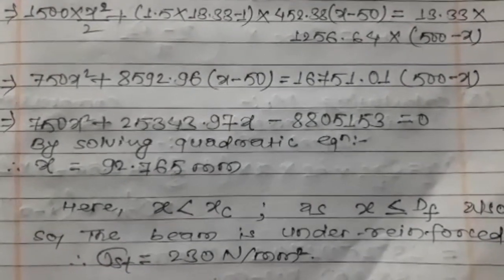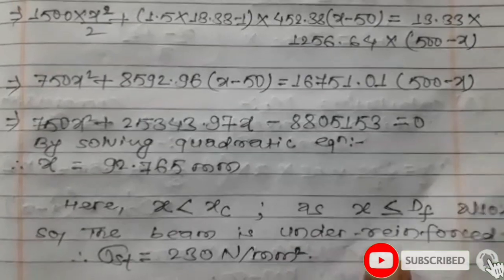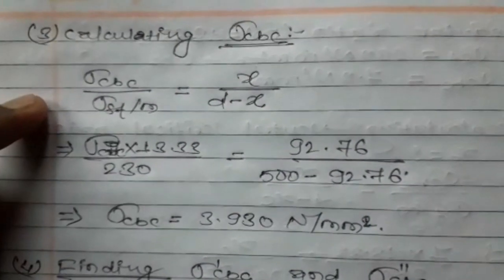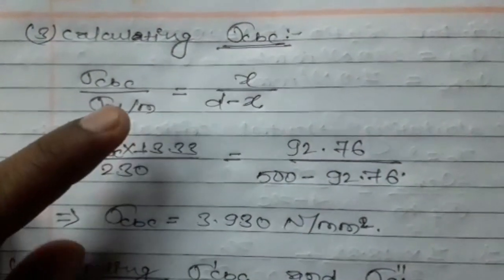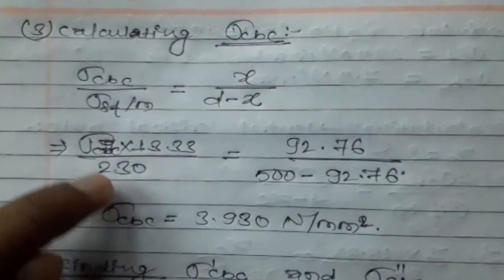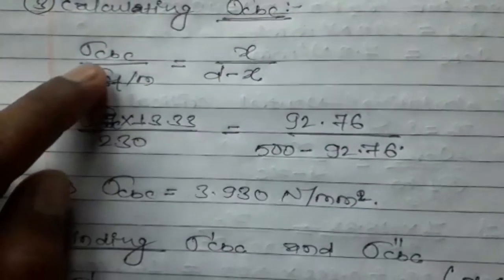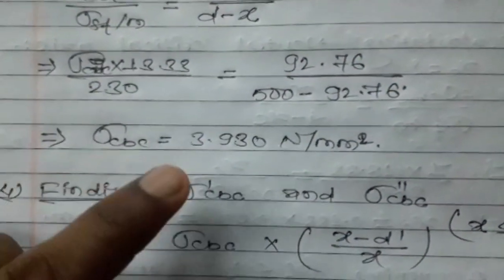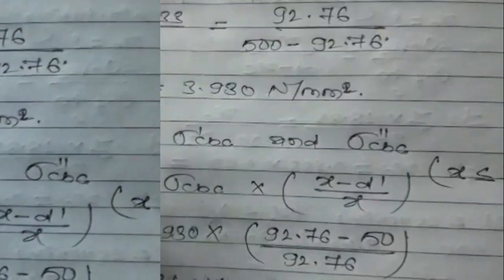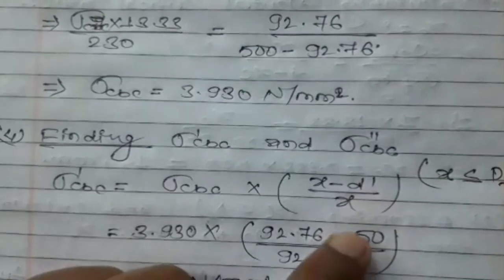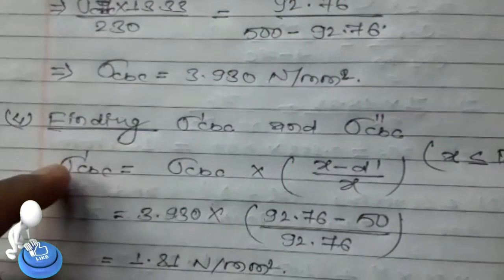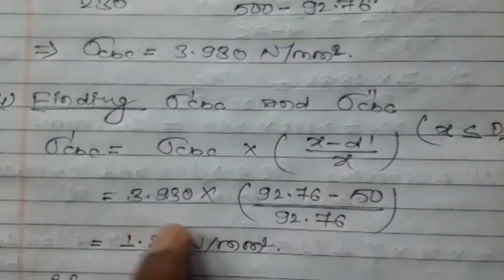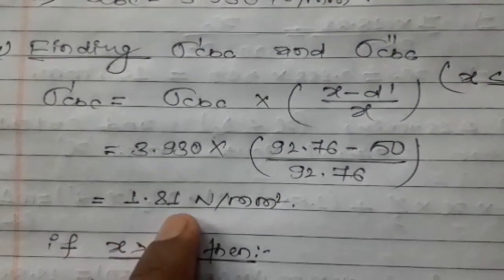This beam is an under-reinforced beam. Since it is under-reinforced, σ_st = 230 N/mm² (the steel stress governs). Using the stress relationship: σ_cbc / σ_st = x_u / (d − x), we calculate the actual concrete stress: σ_cbc = σ_cbc × (x_u − d') / x_u = 1.81 N/mm².